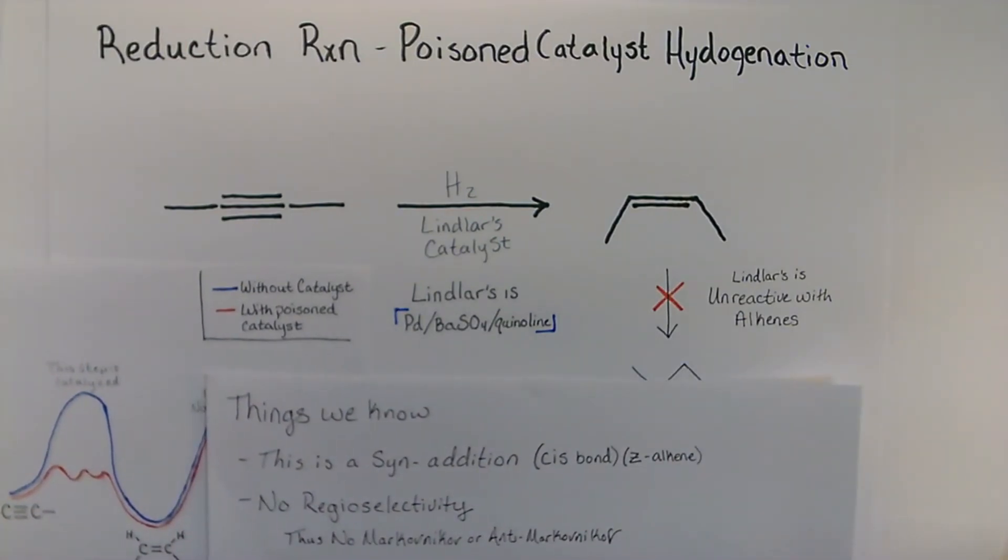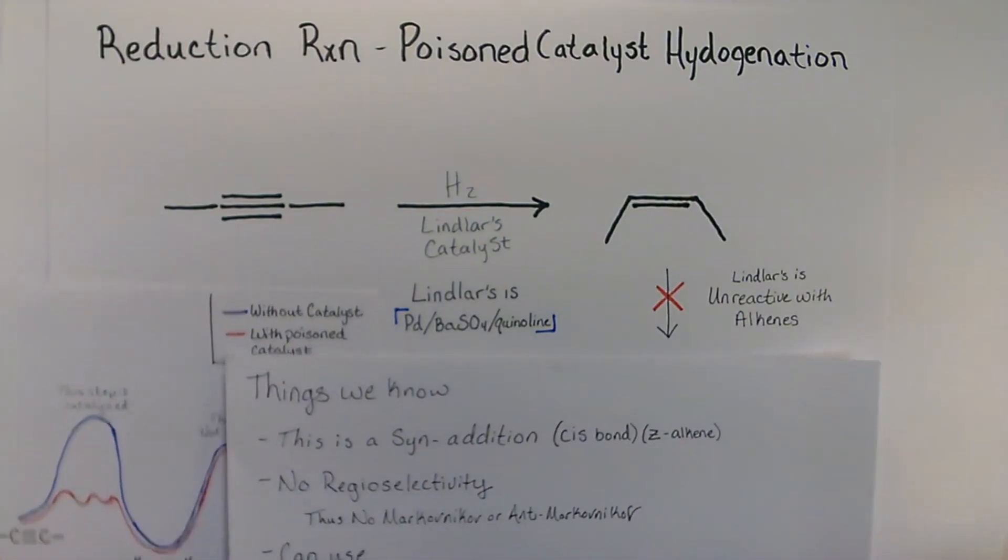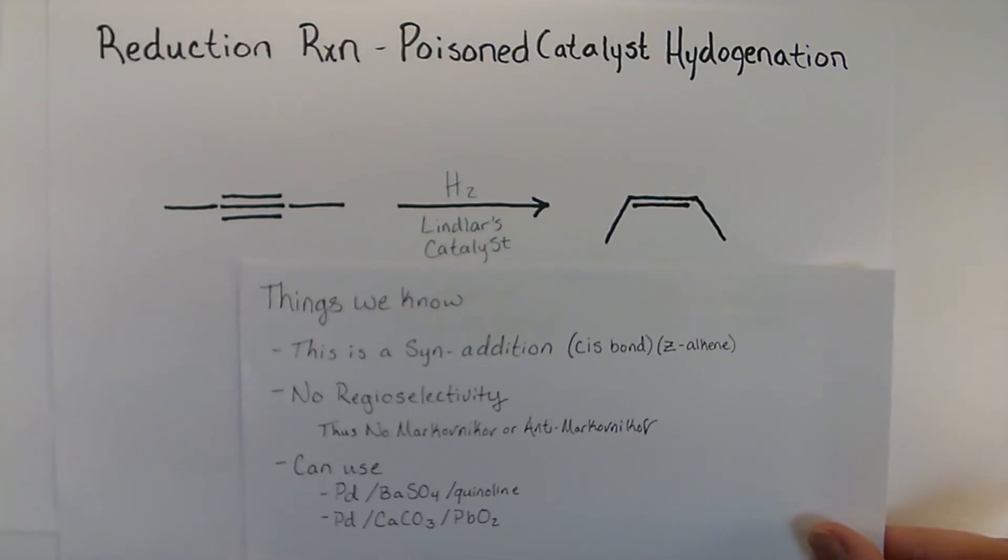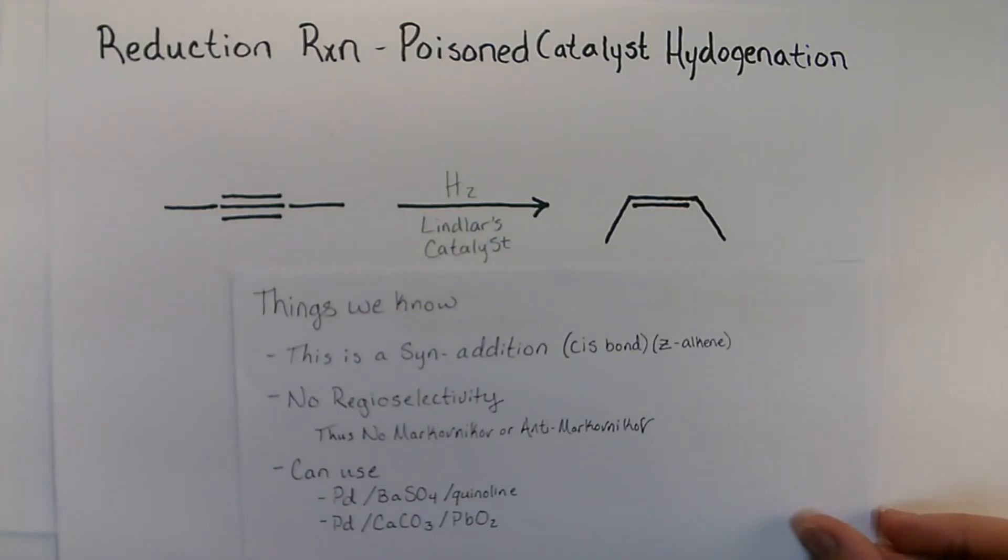So some things that we know: This is a syn addition with a cis bond or a Z alkene. There's no regioselectivity, thus no Markovnikov or anti-Markovnikov. You can use palladium, barium sulfate, and quinoline or palladium, calcium carbonate, and lead pentoxide.